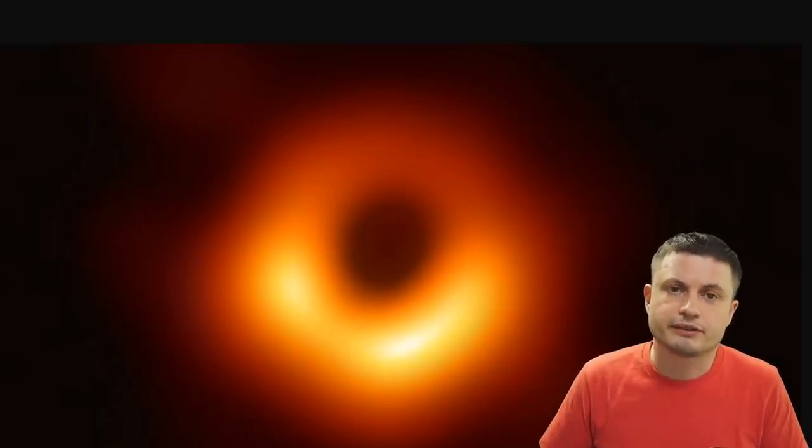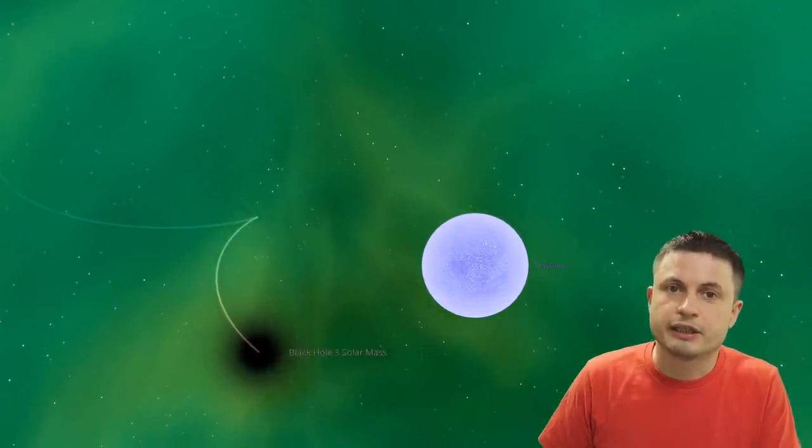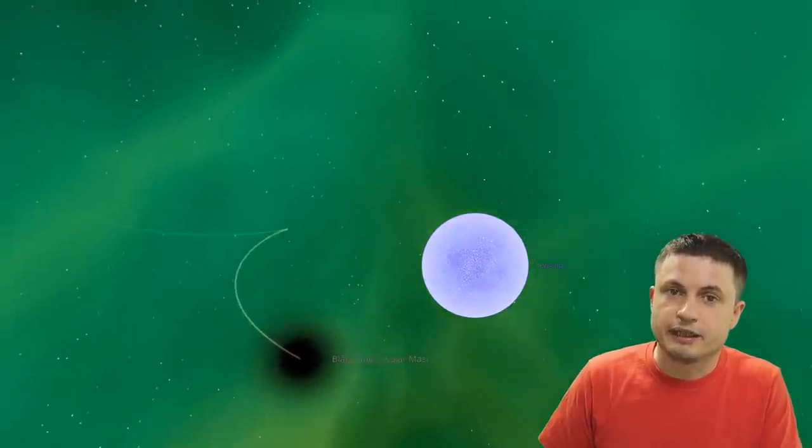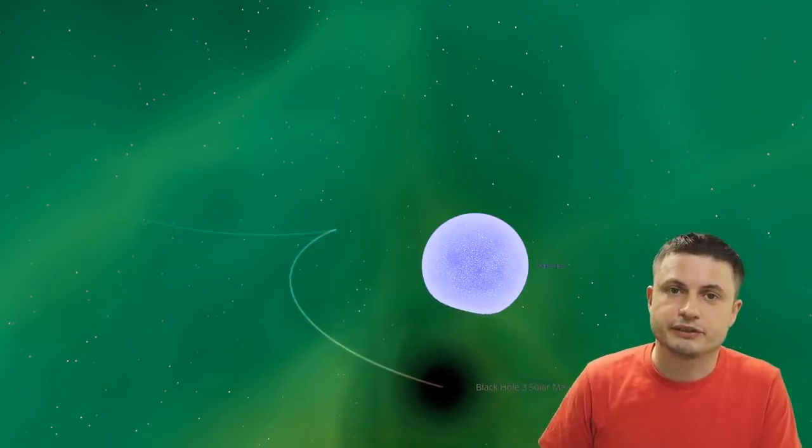But with smaller objects that are maybe around two to three masses of the sun, like the ones we have simulated here, the story is much different. They actually do act and look very similar from a distance.